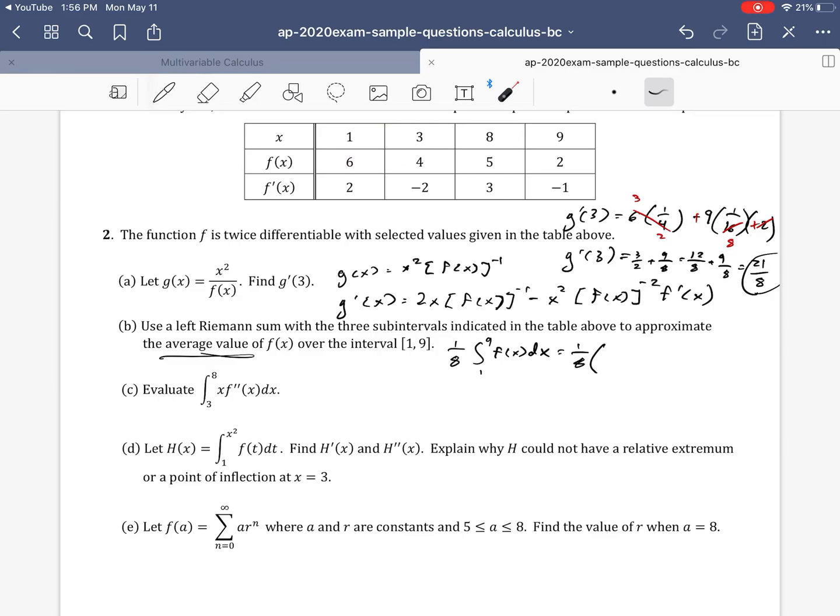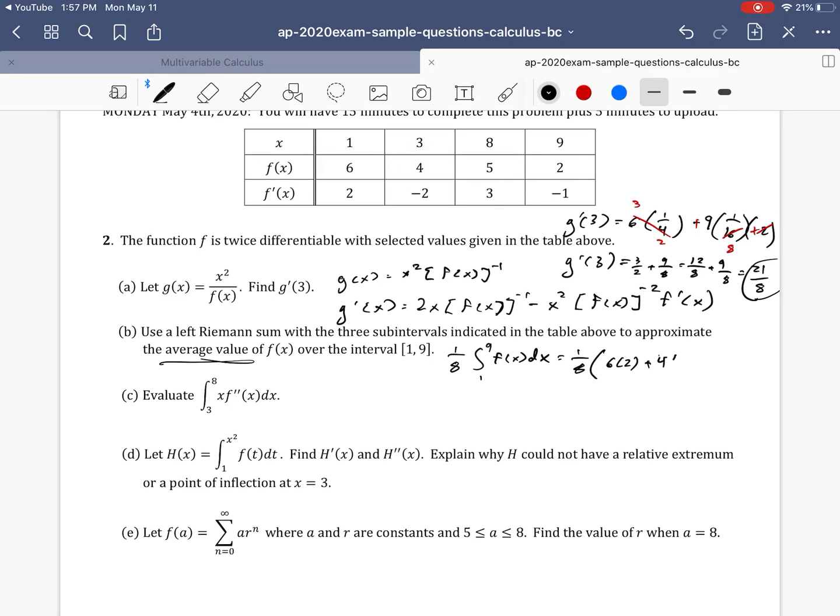Awesome. So we start with f of one, our lowest value, and then our change in between these next two x values. So one eighth times, now we have a six, that's f of one, times our delta x from one to three. How do you go from one to three? You add two, so that's six times two, plus now our next lowest x value, which is three. So we have f of three, which is four, times our delta x. So how do you go from three to eight? You add five.